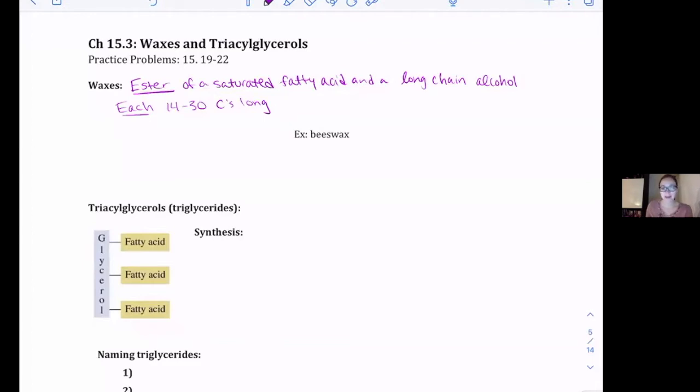So waxes are an ester of a saturated fatty acid, so what we've just been talking about in section two, and a long-chain alcohol. So an esterification reaction that we've learned before between these two long chains, one carboxylic acid, one alcohol together. Each of these are approximately 14 to 30 carbons long.